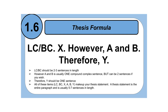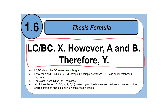Here is a review of what the thesis formula is. LCBC, however, A and B, therefore, why? LCBC should be two to three sentences in length. However, A and B should be one to two sentences. Therefore, Y is only one sentence, and X is only one as well. All of these items will make up your thesis statement, so this whole paragraph makes up your thesis statement. The whole paragraph should be roughly around five to seven sentences long.